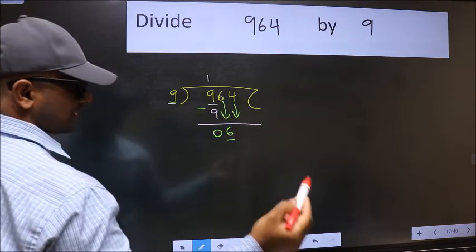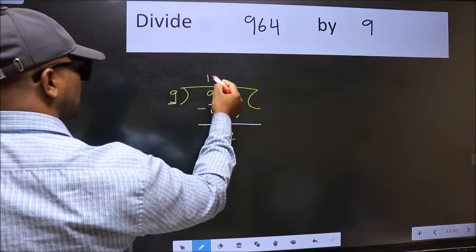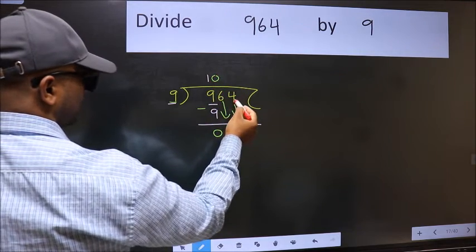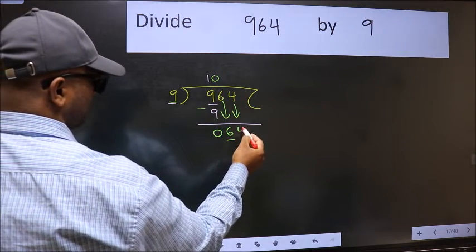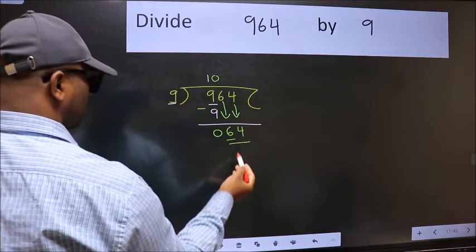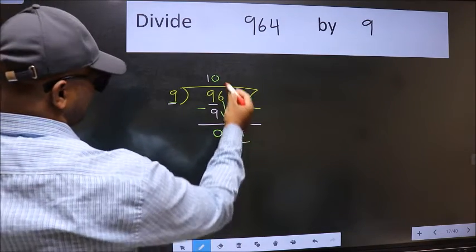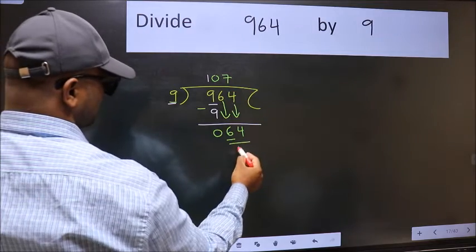And the rule to bring down the second number is we should put 0 here. Then only we can bring this number down. Now 64. A number close to 64 in the 9 table is 9 sevens 63.